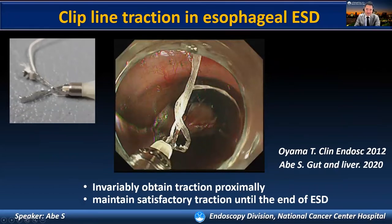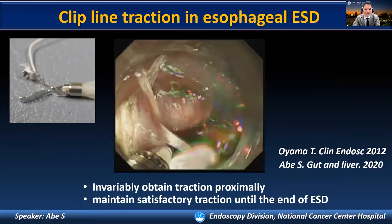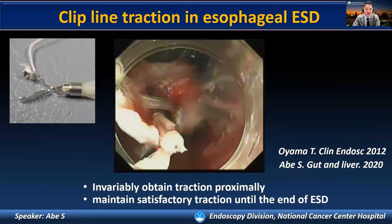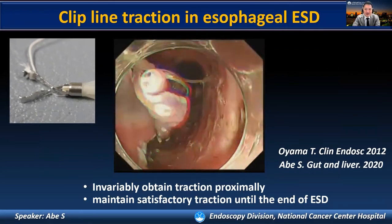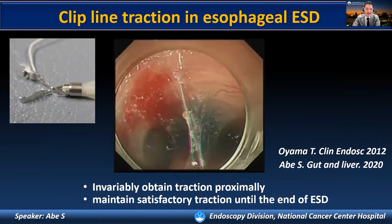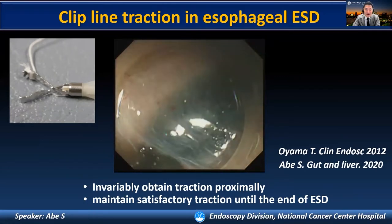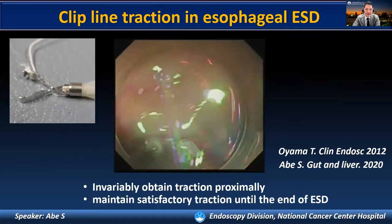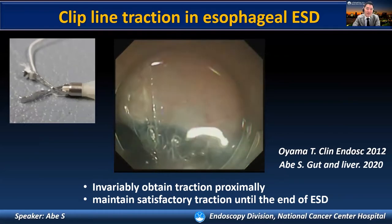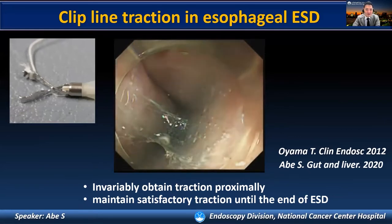After submucosal dissection of the left distal side, the clip-line traction technique is commonly used during esophageal ESD. A line — typically dental floss — is tied to an end clip outside the patient, and the clip with the line is deployed to the backside of the specimen. When the line is pulled through the mouth, the submucosal layer is well exposed and lifted up with sufficient traction. We hook the IT knife nano to the edge of the submucosal, and the submucosal dissection is nicely performed parallel to the muscle layer.